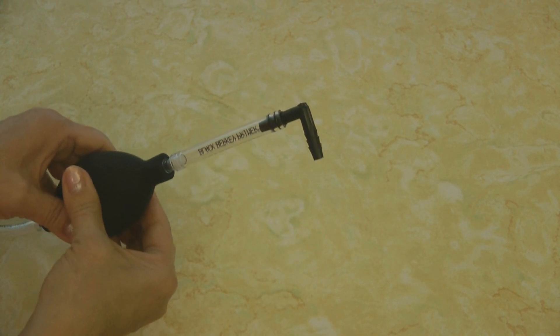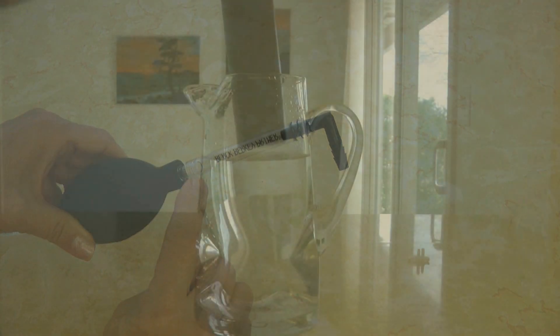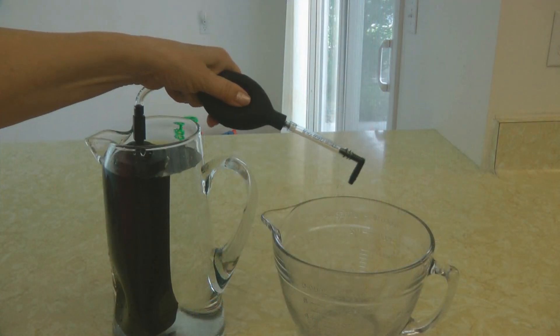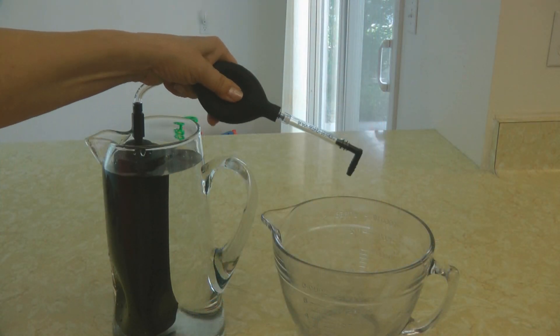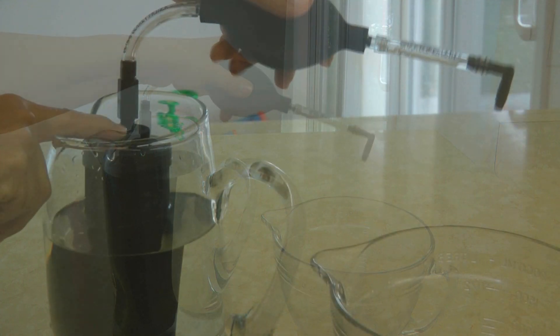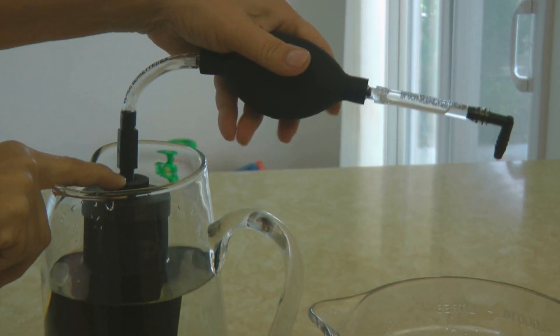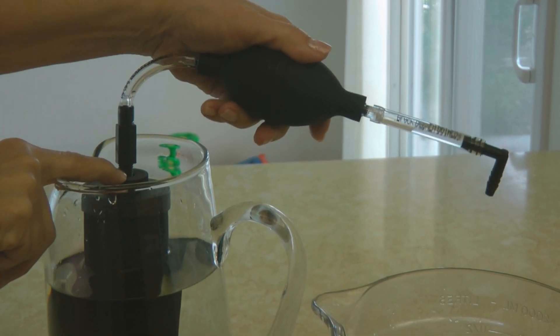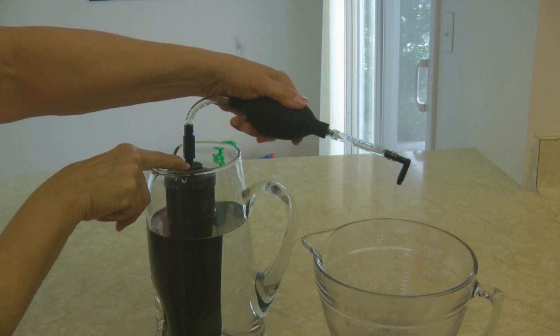Submerge your black filter into water and squeeze your pump. You can hear the air is coming out and the water is going in. As you continue to pump, your black Berkey filter will fill up with water. Keep pumping until the water is flowing. Now you're ready to install the black filter into your upper chamber.